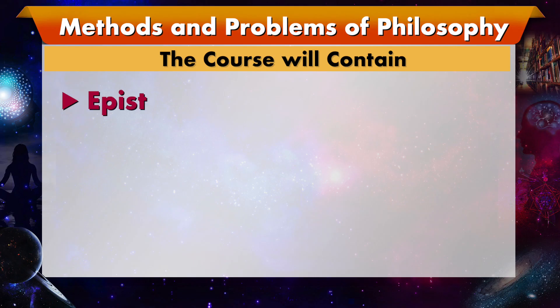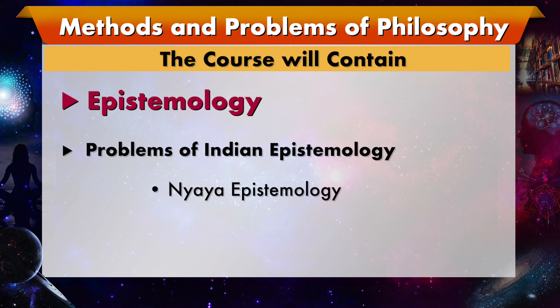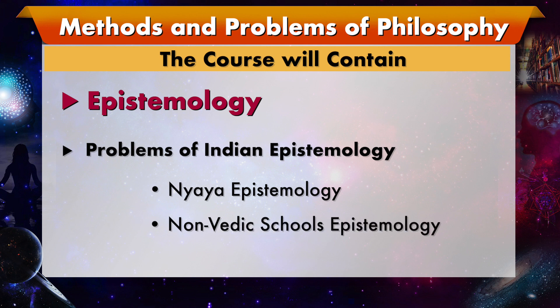For instance, we would start with theory of knowledge, which is epistemology. In the course we would be dealing with problems of Indian epistemology. Largely we would be dividing it into two categories: in the first category we would be discussing Nyaya epistemology — problems related to the epistemological understanding of Nyaya — and then in the subsequent part dealing with non-Vedic schools' epistemology.